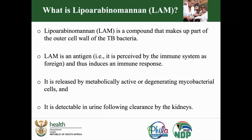It is a polysaccharide — a compound that makes up part of the outer cell wall of the TB bacilli. It is a key component of the TB bacillus and is actually an antigen, because it is perceived by the immune system as something foreign. It's not something we have as humans, but you can only have it if you have some infection.